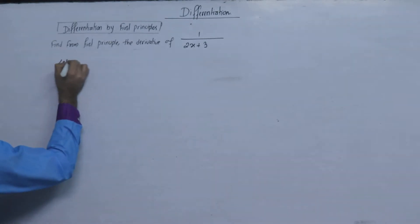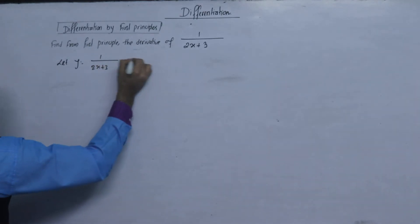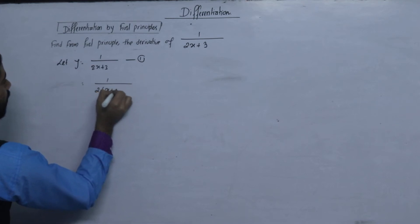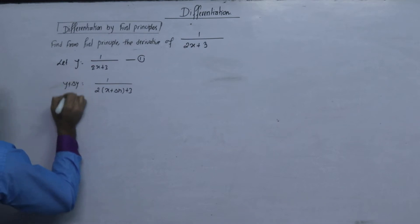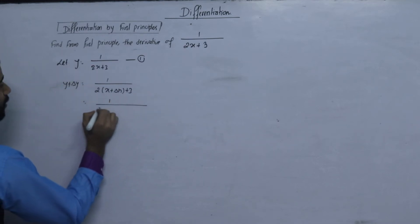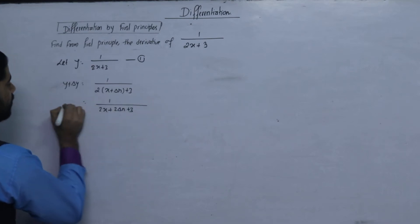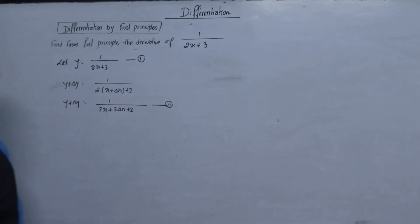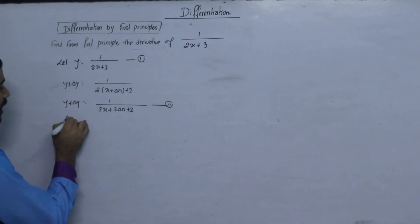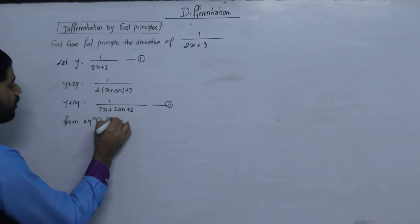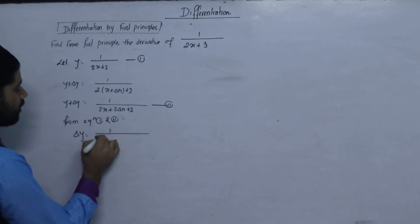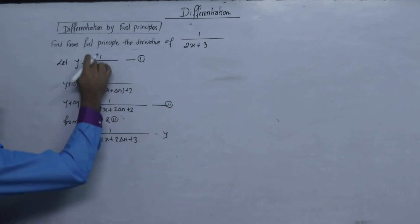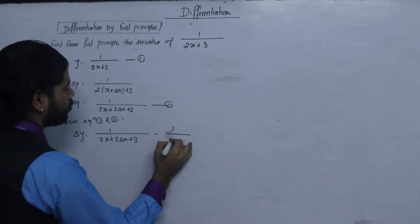We have the given equation y equals 1 upon 2x plus 3. If x increases by a small amount delta x, then y plus delta y equals 1 upon 2x plus 2 delta x plus 3. So delta y equals 1 upon 2x plus 2 delta x plus 3, minus y, which is minus 1 upon 2x plus 3.